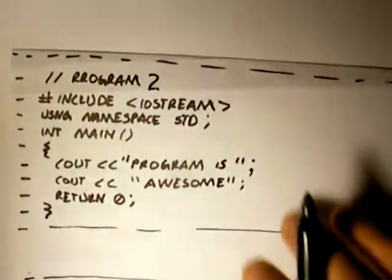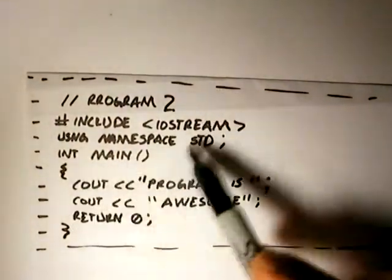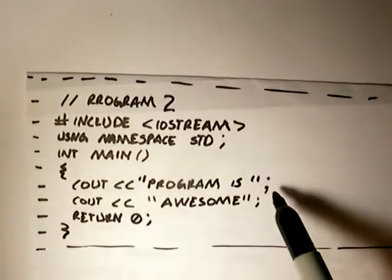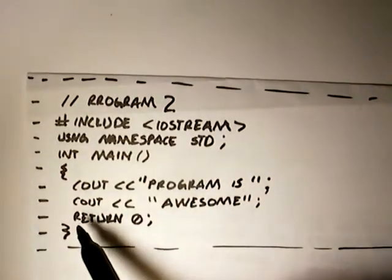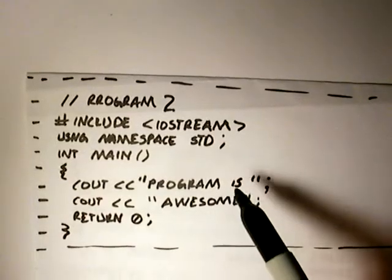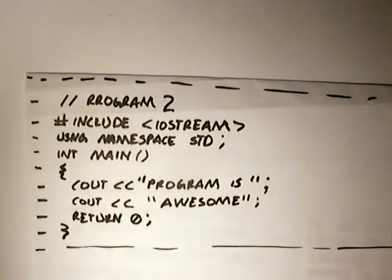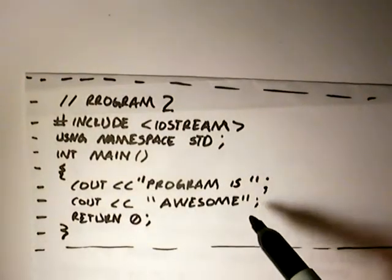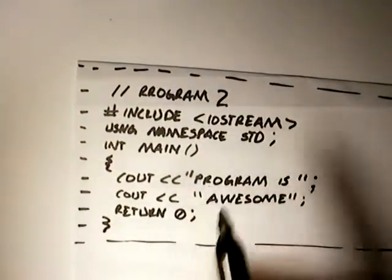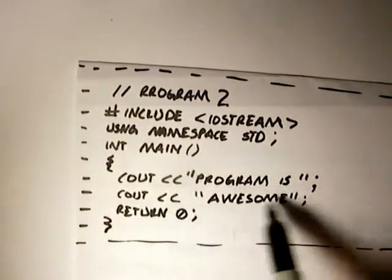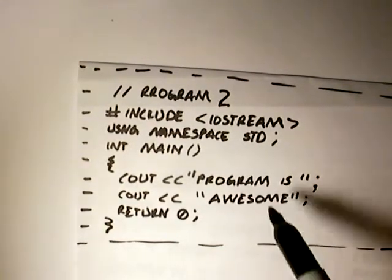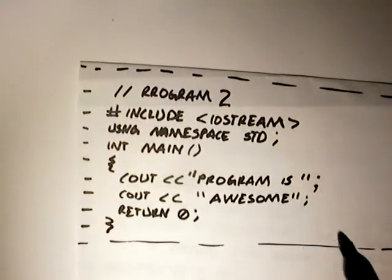Now we have another program. Let's jump into what's inside the main function. We're going to cout 'program is', and then we're going to cout 'awesome'. These are on two separate cout statements on two separate lines of code. Now the question is: is it going to be all on the same line or on two separate lines? Well, the compiler is smart enough to recognize both are text, but it won't matter that they're on different code lines — it's still going to put it all on the same line because there's nothing telling it to put them on separate lines.